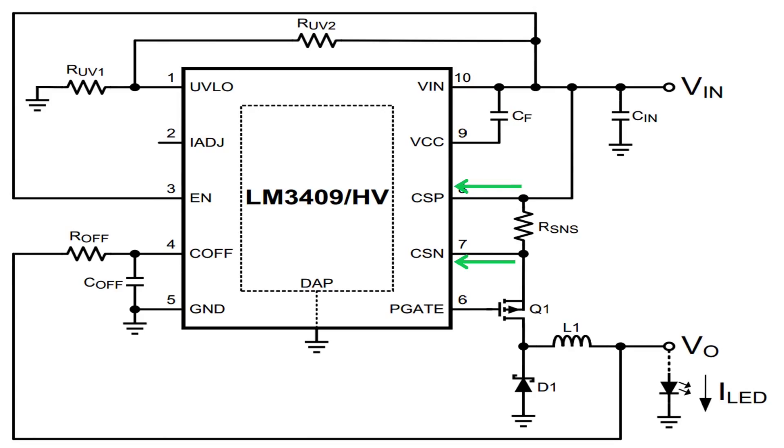Current sense resistor is low value therefore we must ensure extra resistance is not added in the layout. This is a good place to use the Kelvin or 4-wire connection technique.